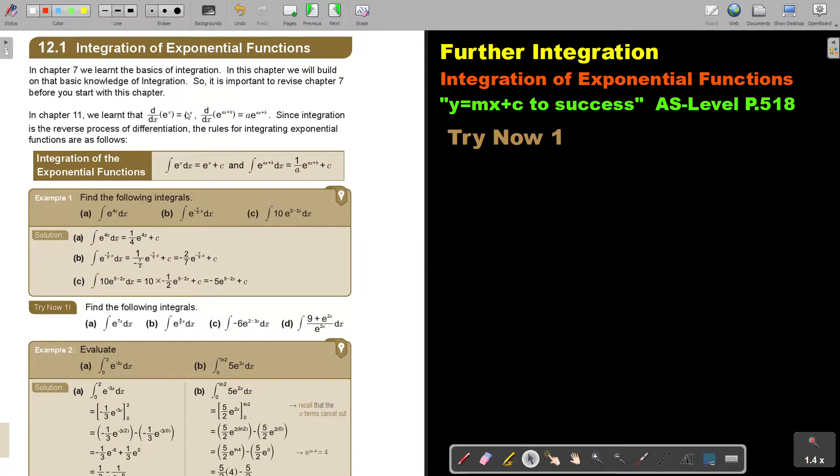Since integration is the reverse process of differentiation, the rules for integrating exponential functions are as follows. If I integrate this, I will just get this. But if I integrate this, because that was just 1, then I will say 1 over a, where with differentiation I just set a. But to do the reverse, I do the reciprocal 1 over a, and I just rewrite. And don't forget your plus c.